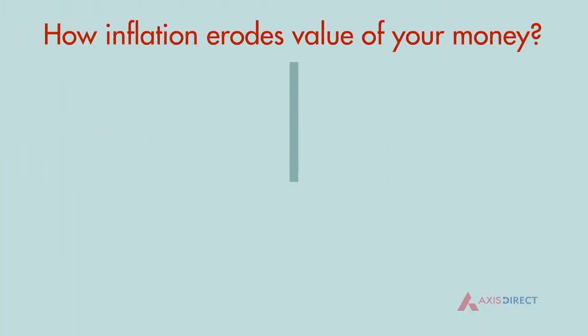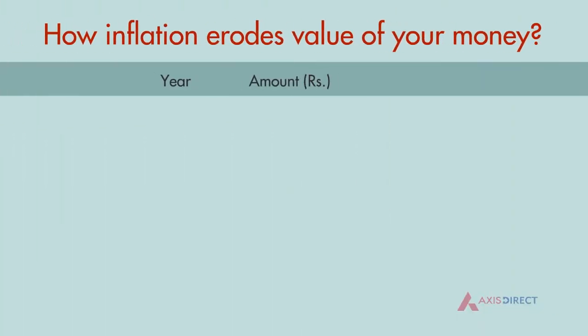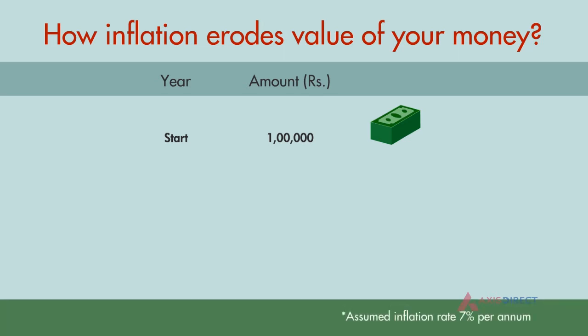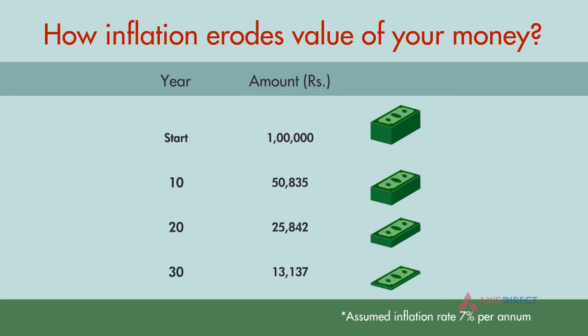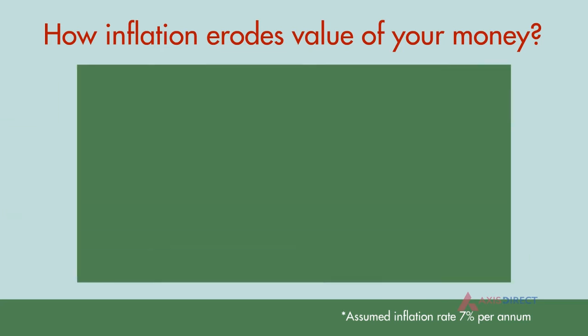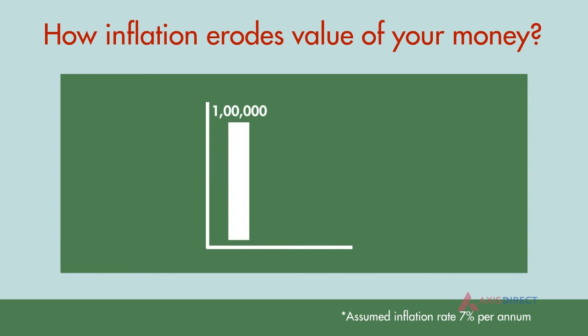But what is the effect of inflation? As prices go up, it indirectly means that the value of your money has gone down. Let's say you have rupees 1 lakh at your home kept idle. With an annual inflation rate of 7%, the value of this rupees 1 lakh keeps falling over time, and after 30 years its value would have fallen by 86.86%. Thus, inflation eats up the value of your money.